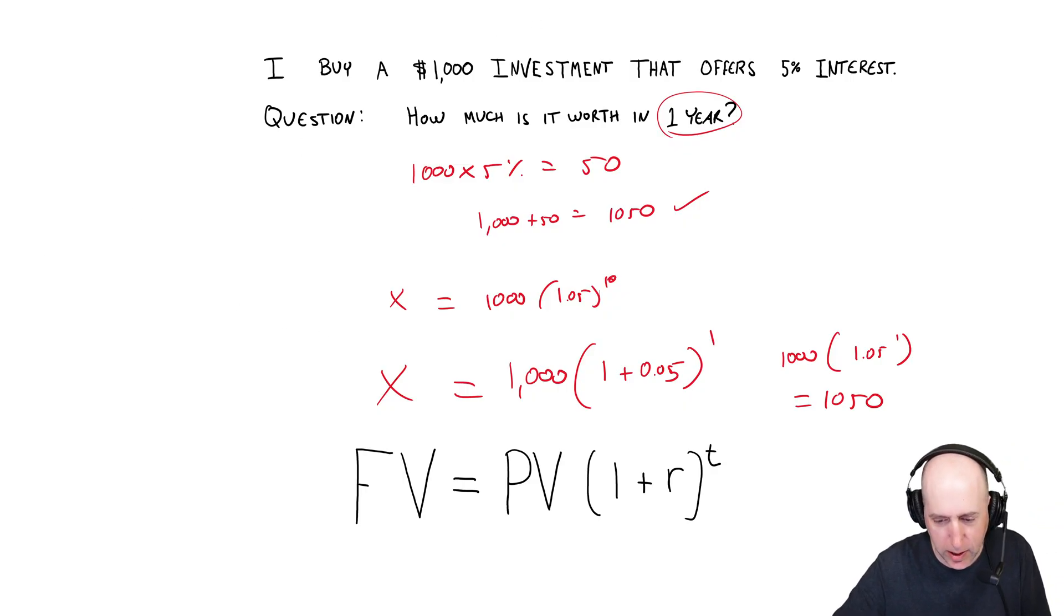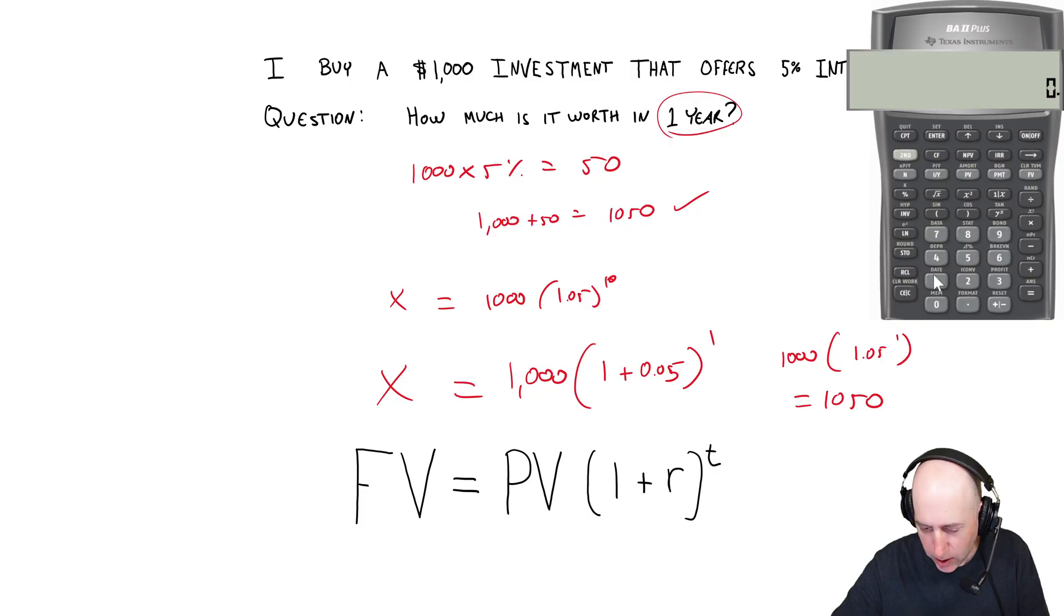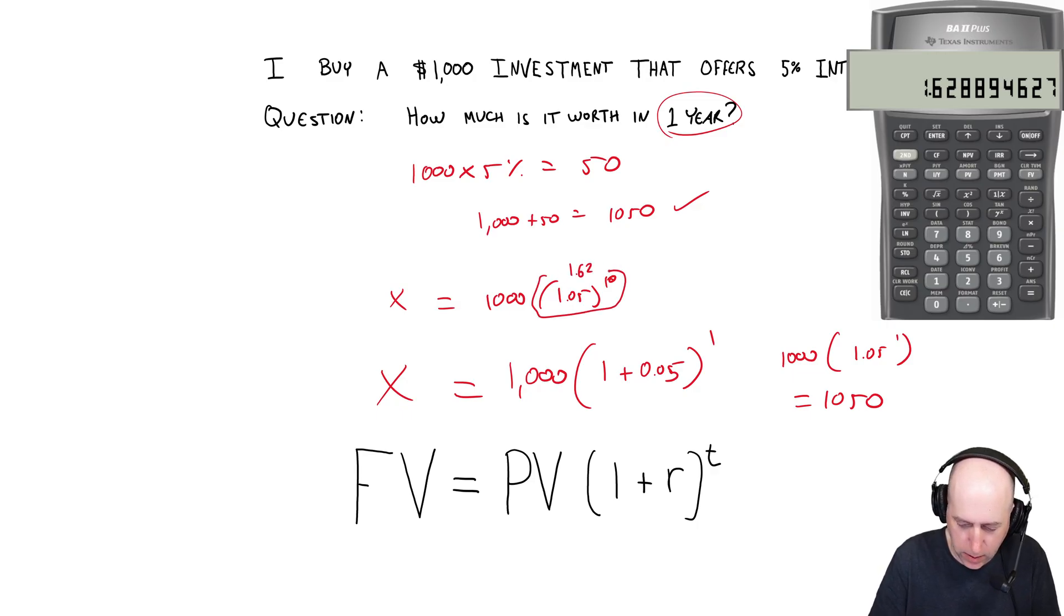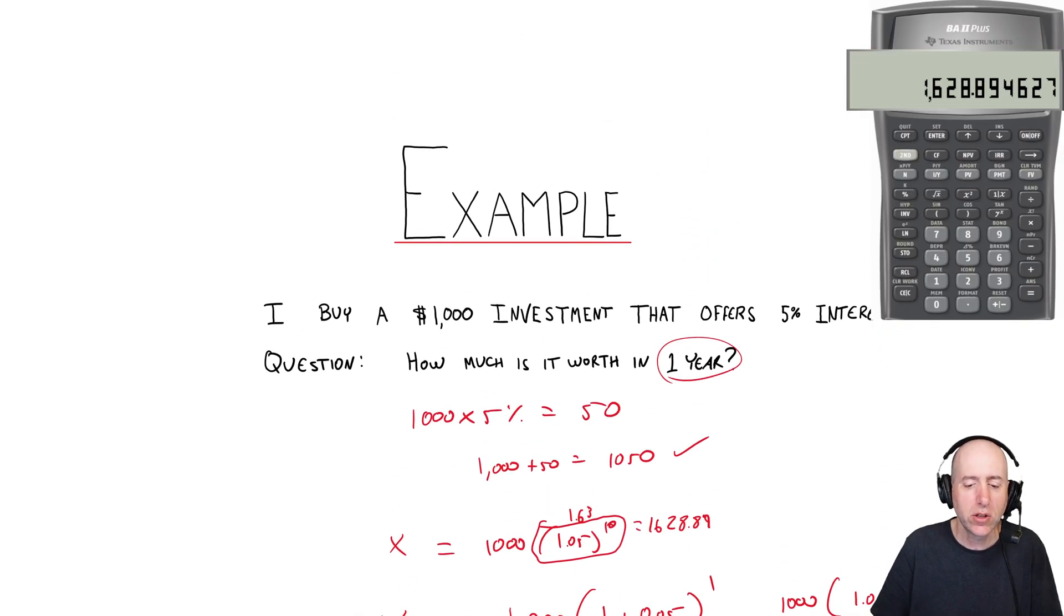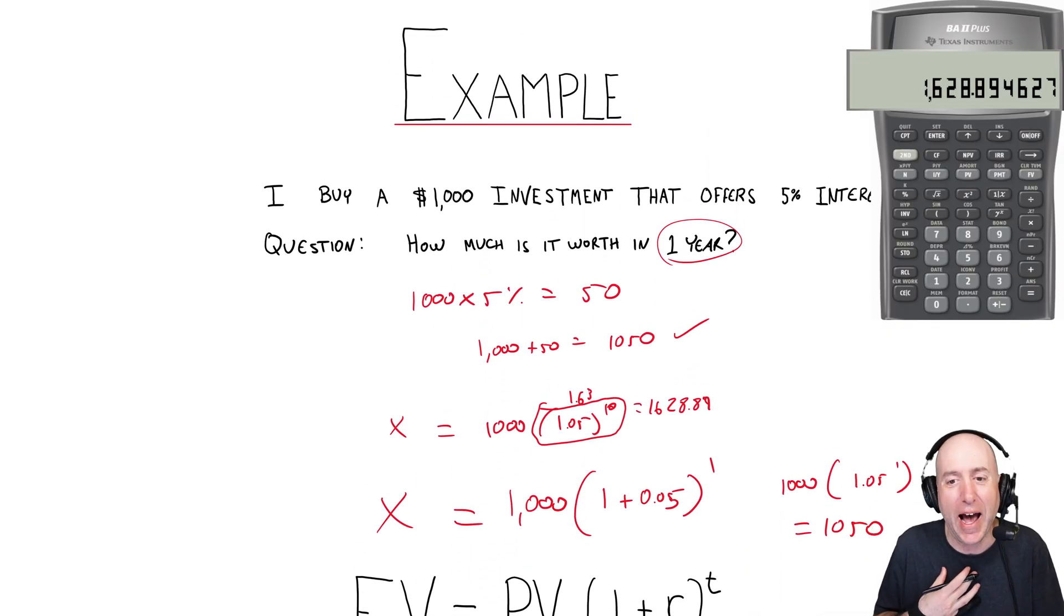Let me get my calculator out. I wasn't planning on doing this, but why not? It's fun. So it's 1.05. This little button is to the power of the Y to the X. You'll see it on even your non-financial calculator. There's Y to the X, 10, 1.62. I multiply that by 1,000. So this number in brackets is worth, or this right here is worth 1.62. 1.63, I should say. 1.62889. I multiply this by 1,000, and I get the value in 10 years. 1.628.89.